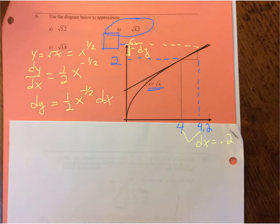Now, I'm trying to estimate the square root of 4.2. On my x, I'm going to put in a value that I know. I know 4. We're focusing on a value near 4.